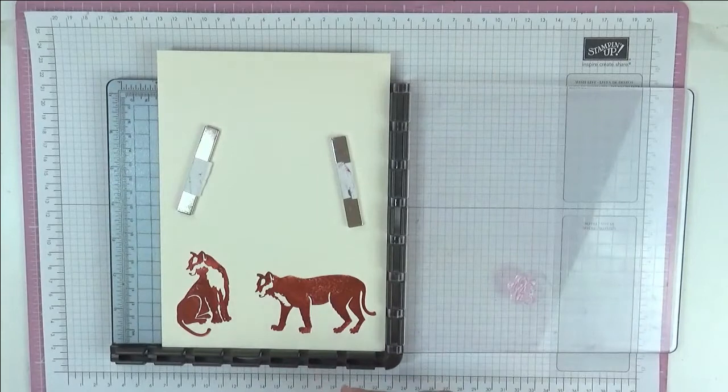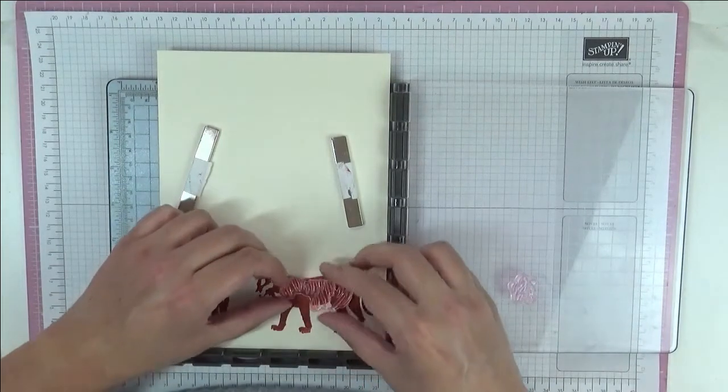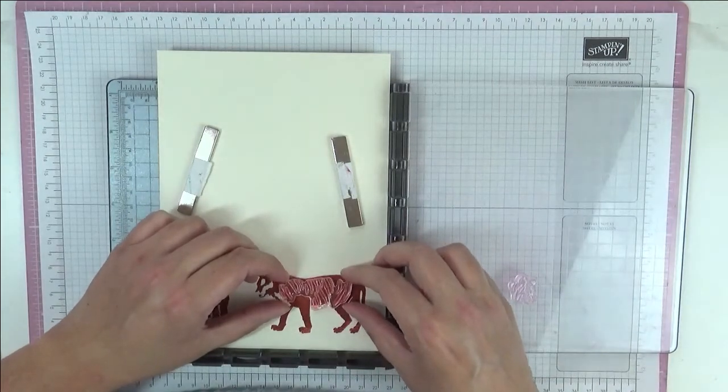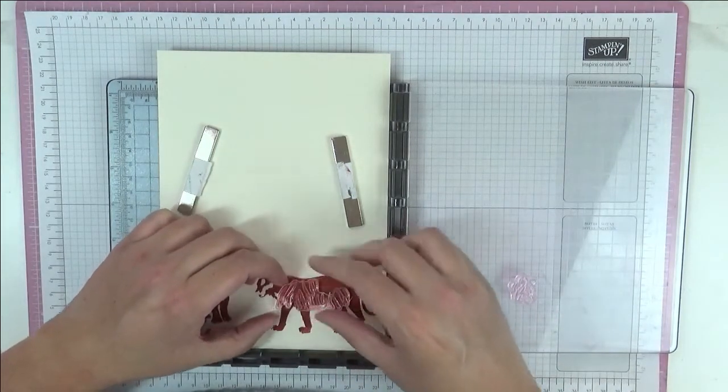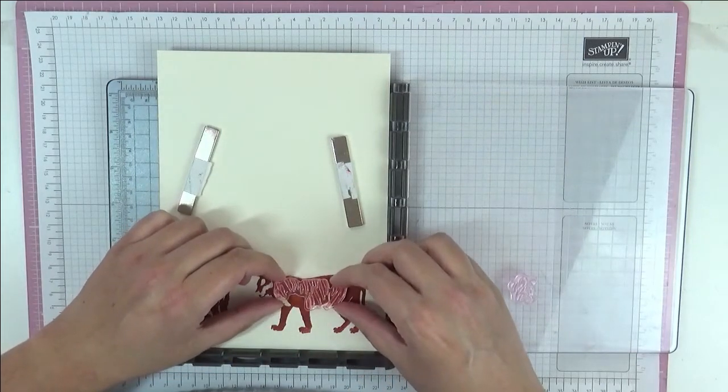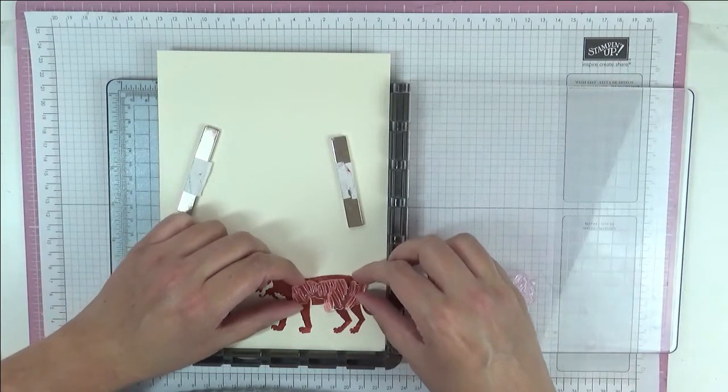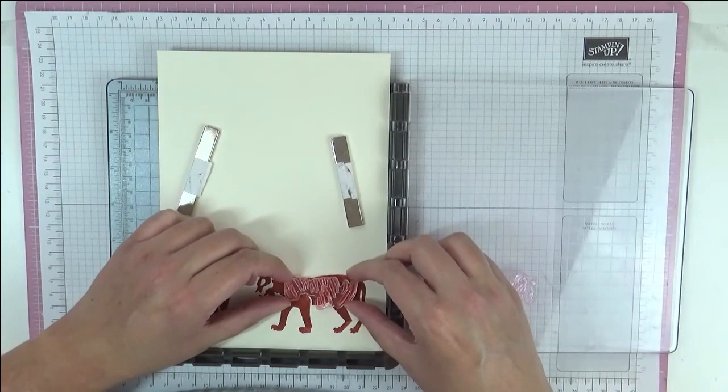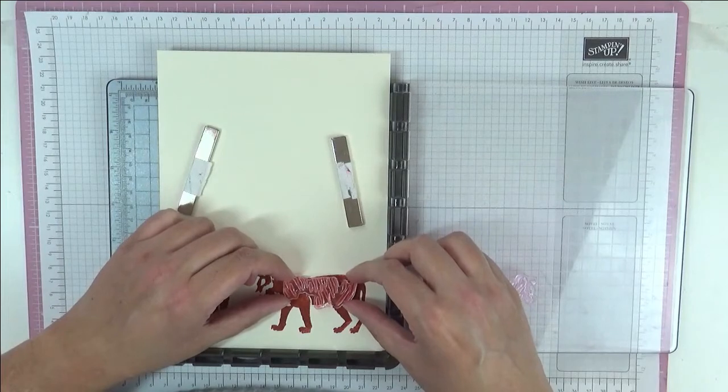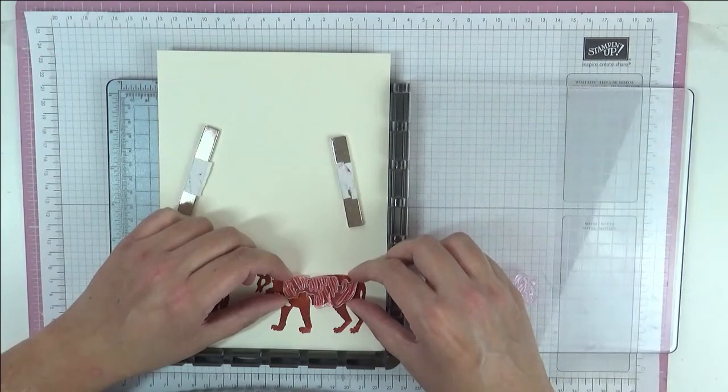And then we're going to put his stripeys on as well. So this bit I always get confused, because I'm easily confused. Just to get his stripes nicely lined up. There we go. That should do it.